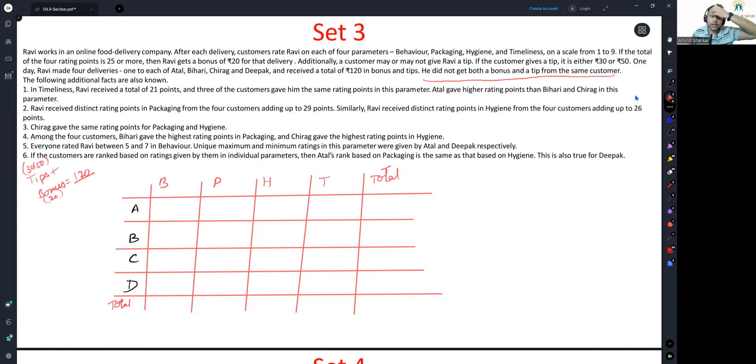Let's work our way forward. In timeliness, Ravi received a total of 21 points. And three of the customers gave him the same rating points in this parameter. So let's say the three customers gave him X, X, X, and the fourth one gave him Y. So we have been informed 3X plus Y equals 21. At this time, can you appreciate, 3X is a multiple of 3, 21 is a multiple of 3, therefore Y also has to be a multiple of 3.